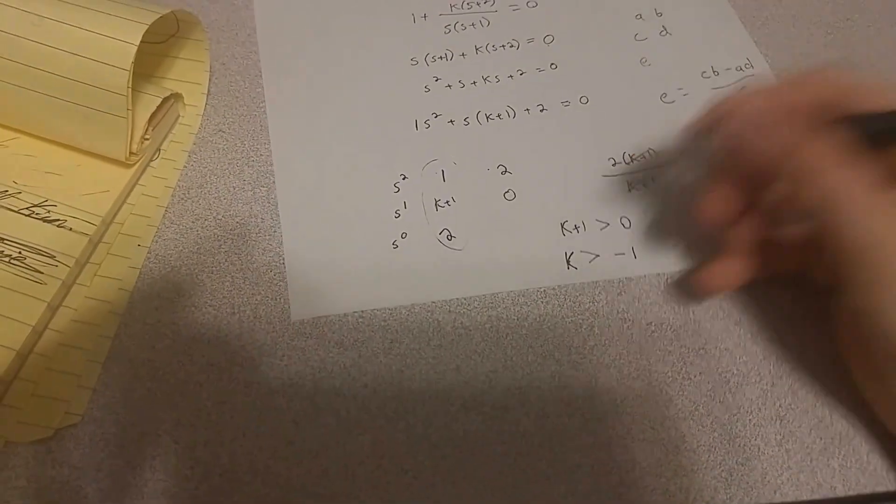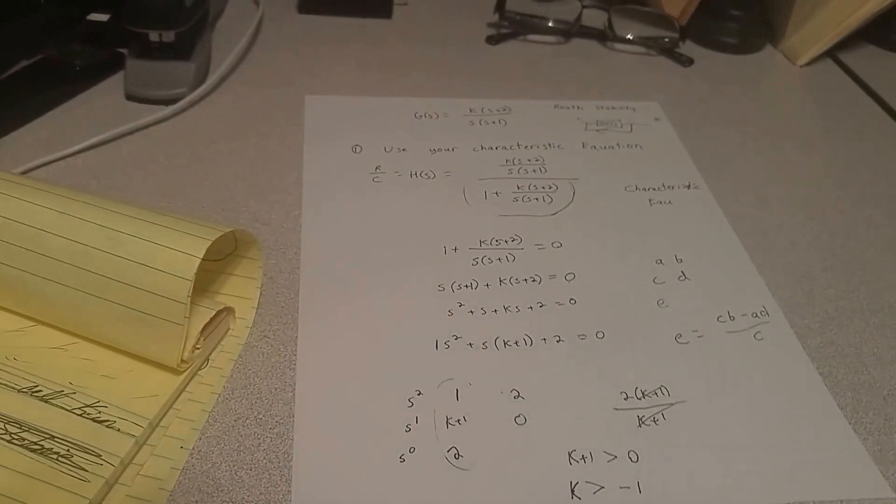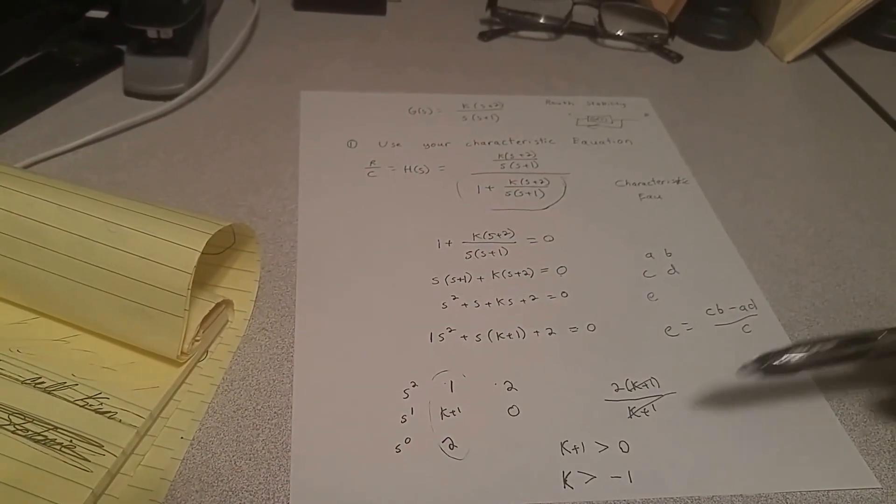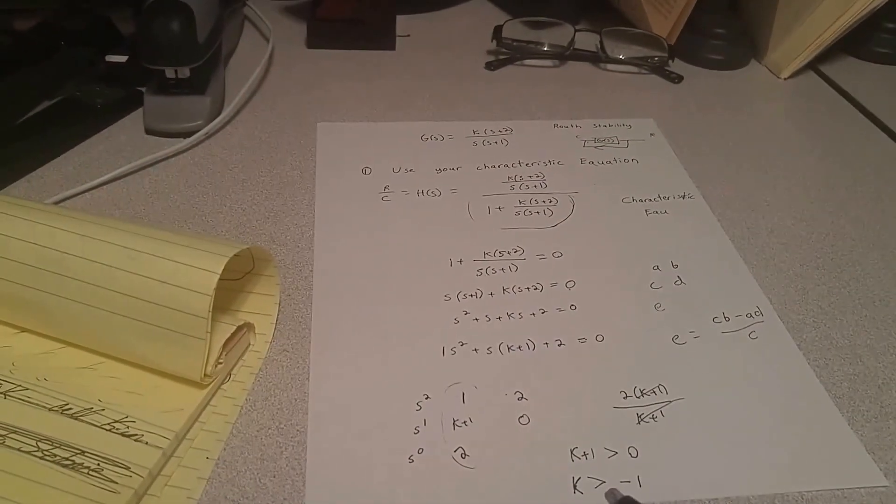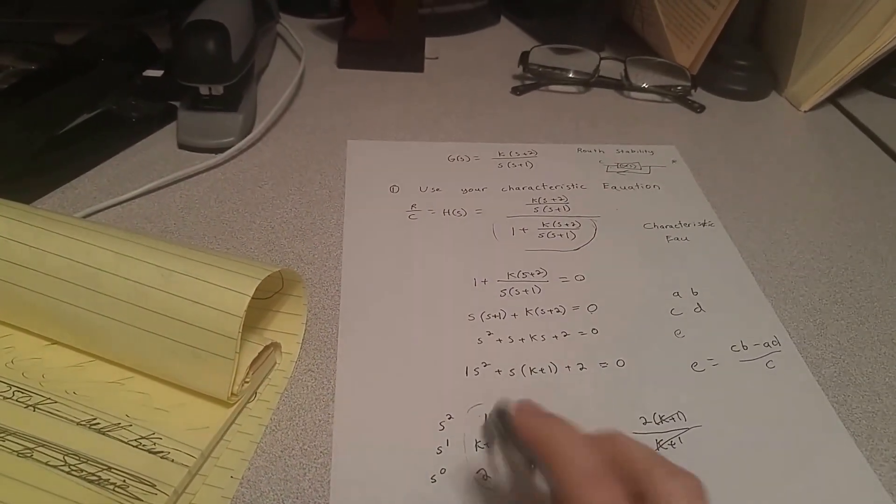Hopefully this makes sense. Let me know if it doesn't and tell me if you have any questions. This means basically that for every value of k greater than negative 1, the system is going to be stable because all of these are going to be greater than 0.